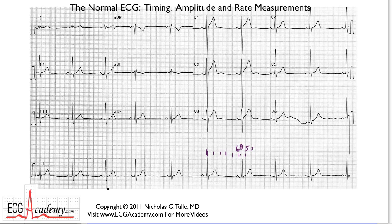Let's try it again. Here's one that lands on a heavy line. Counting: 300, 150, 100, 75, 60. Wait a minute — that's not the same. If this is 75 and this is 60, we're talking a rate of maybe 68 beats per minute. That's not the same as the other one.